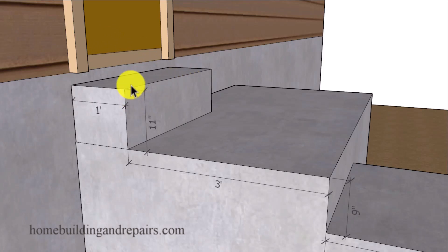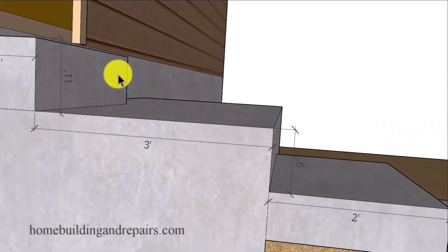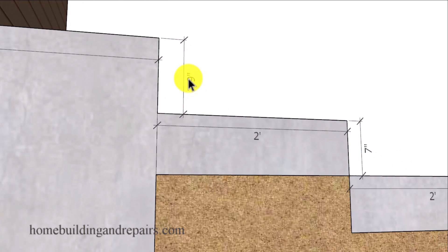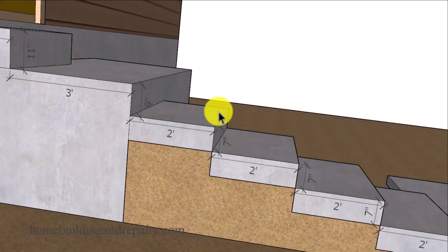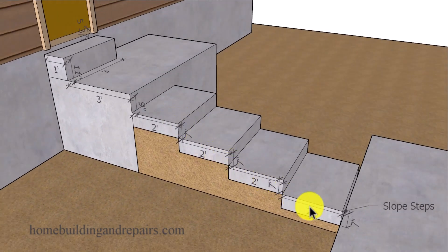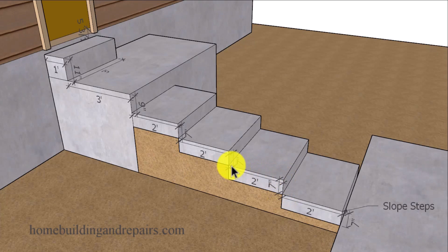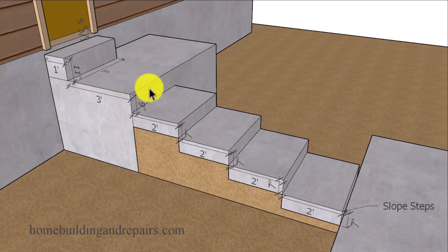The next two problems we're going to run into are the riser heights here. Usually the riser height is going to have a maximum of seven and three-quarter inches, or it might be eight inches, but you're probably not going to get away with nine inches or eleven inches. We're also not going to have a problem with the rest of the stairway — seven-inch risers, two-foot-deep treads, all the same size — except for right here.